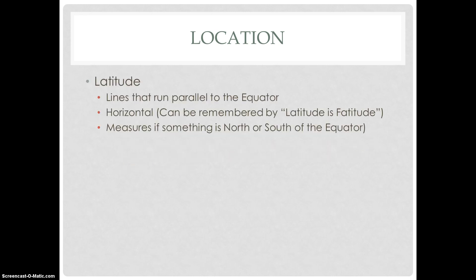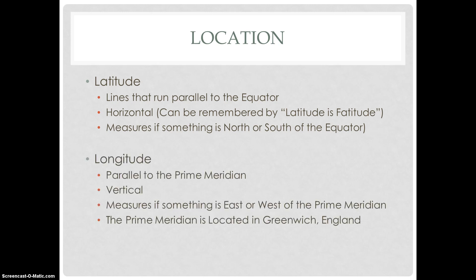Latitude lines run parallel to the equator — they are horizontal. A helpful way to remember this: latitude measures whether something is north or south of the equator. Longitude lines run parallel to the prime meridian — they run vertically. Longitude measures whether something is east or west of the prime meridian. The prime meridian measures zero degrees longitude and is located in Greenwich, England.